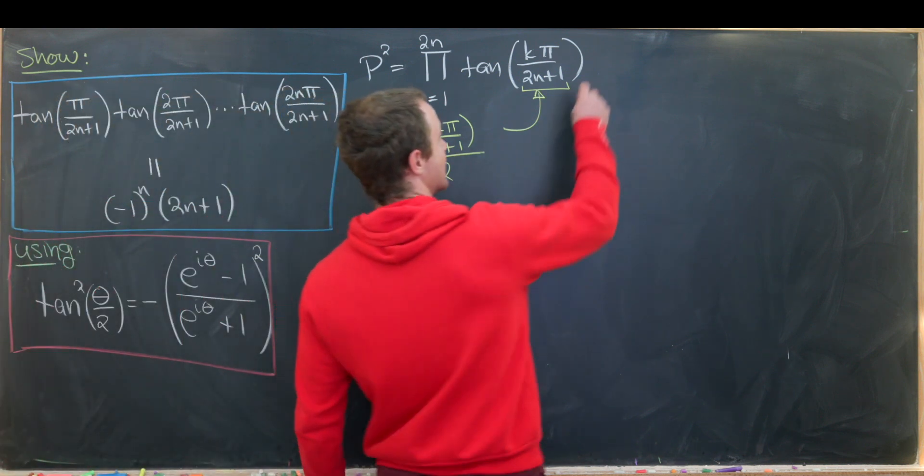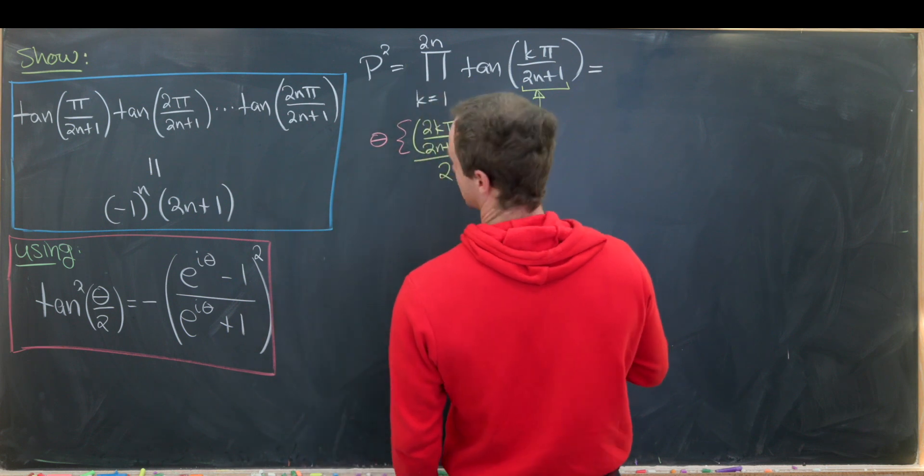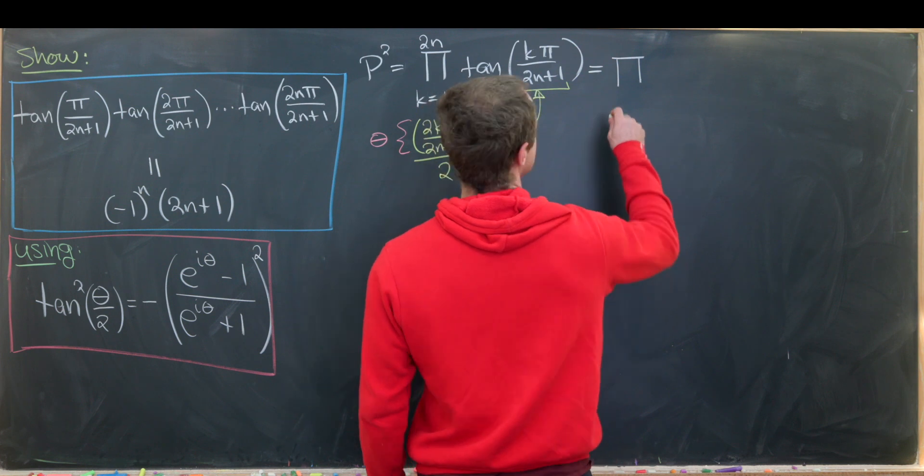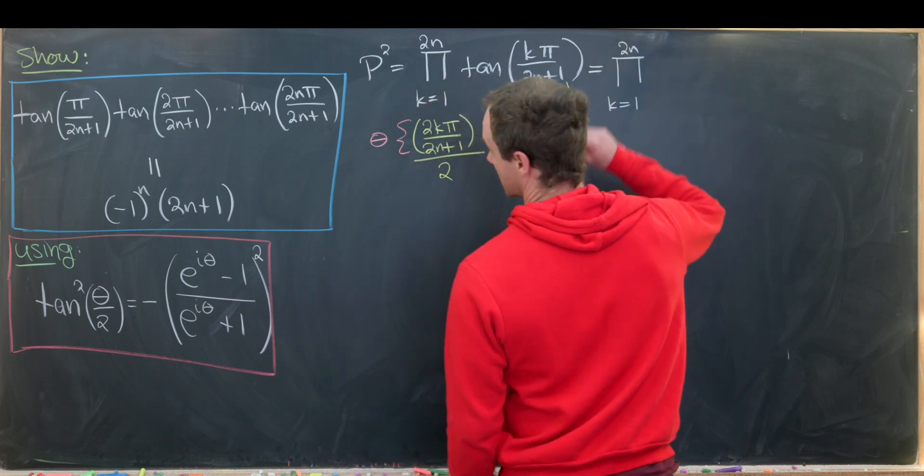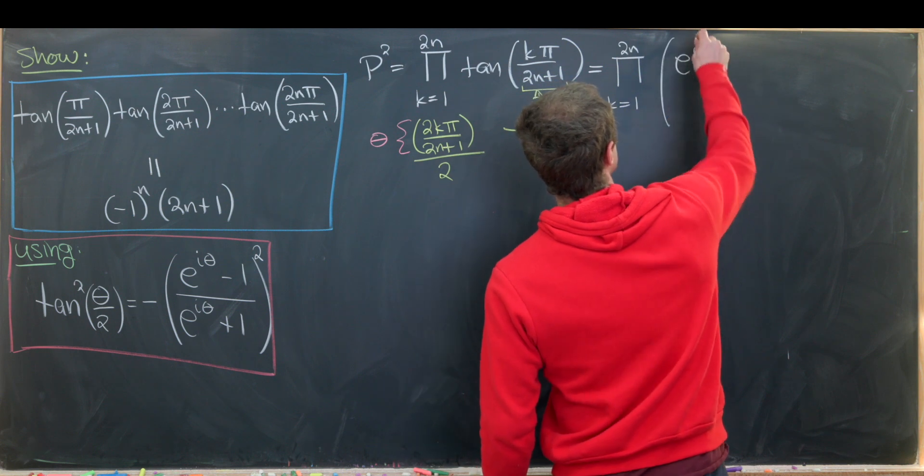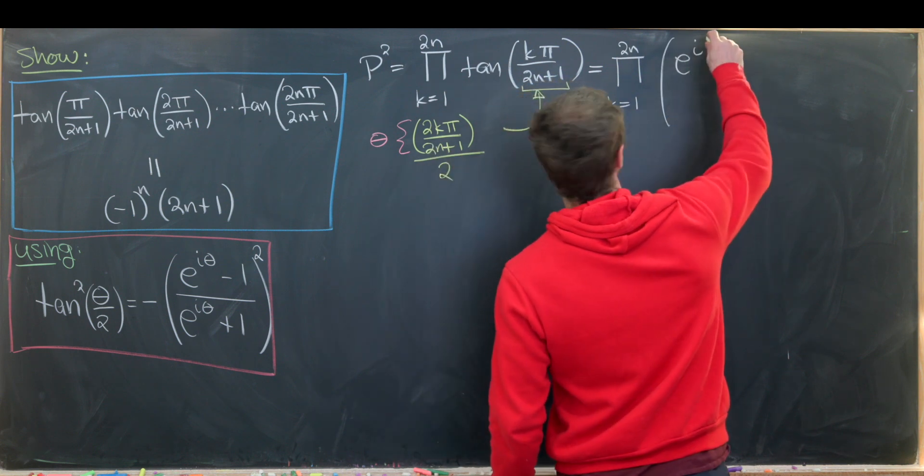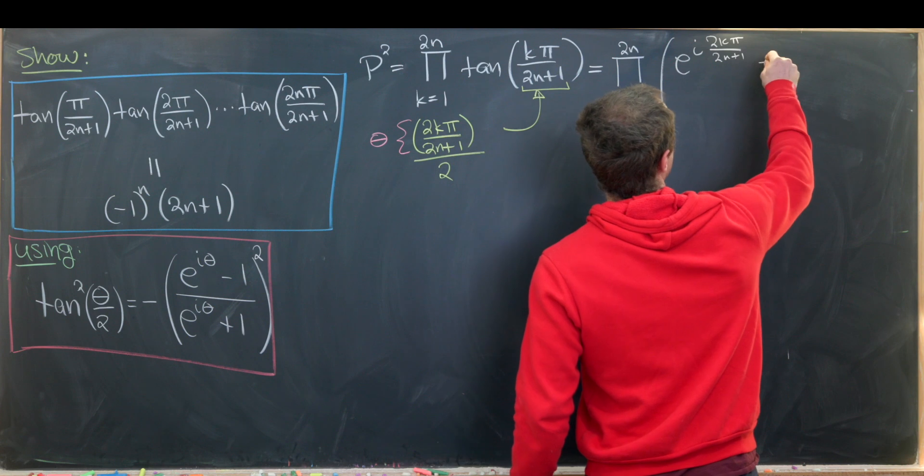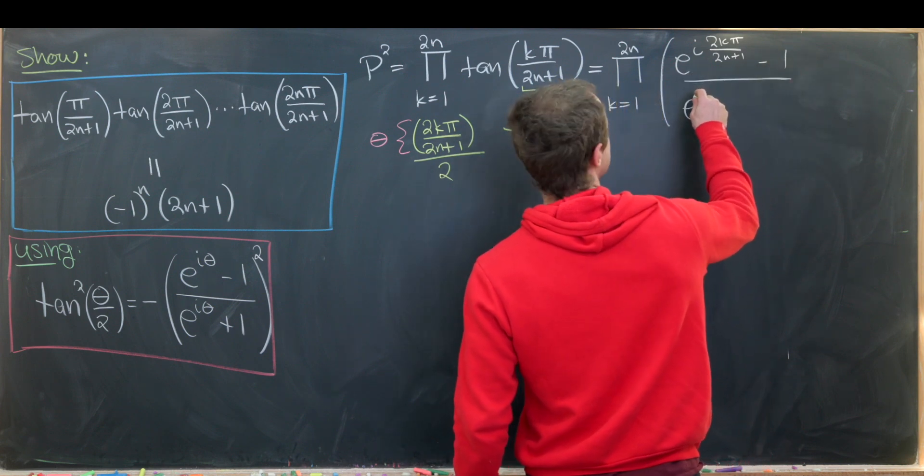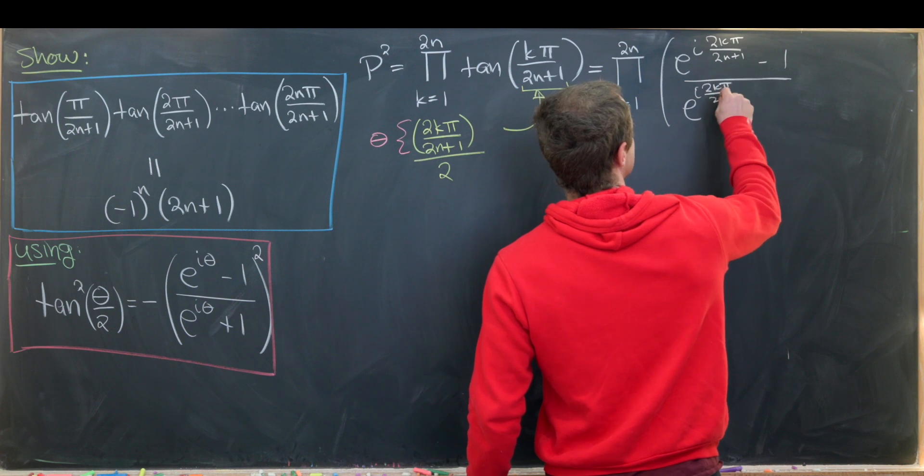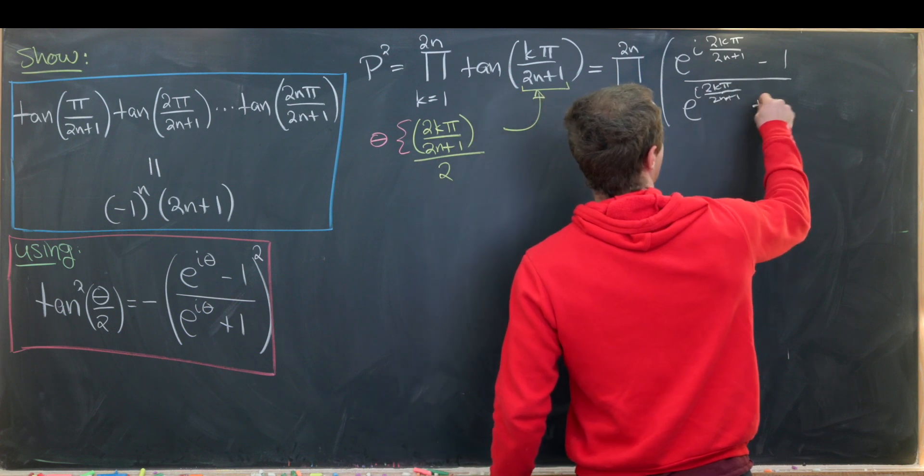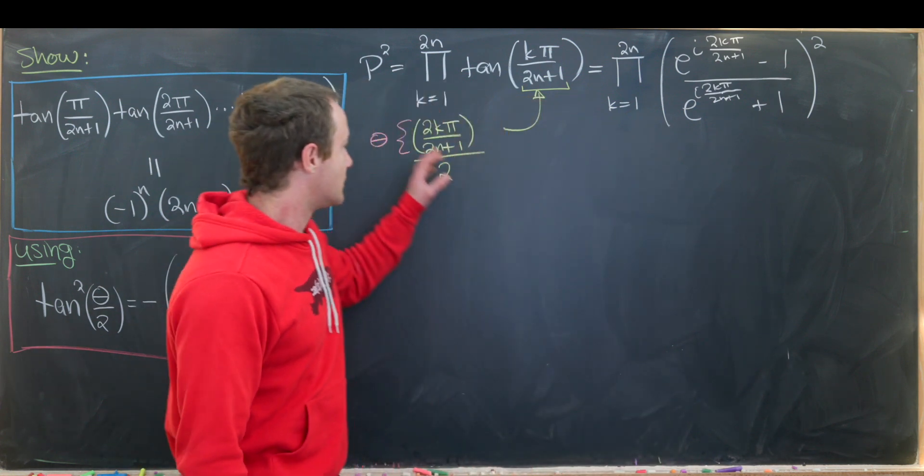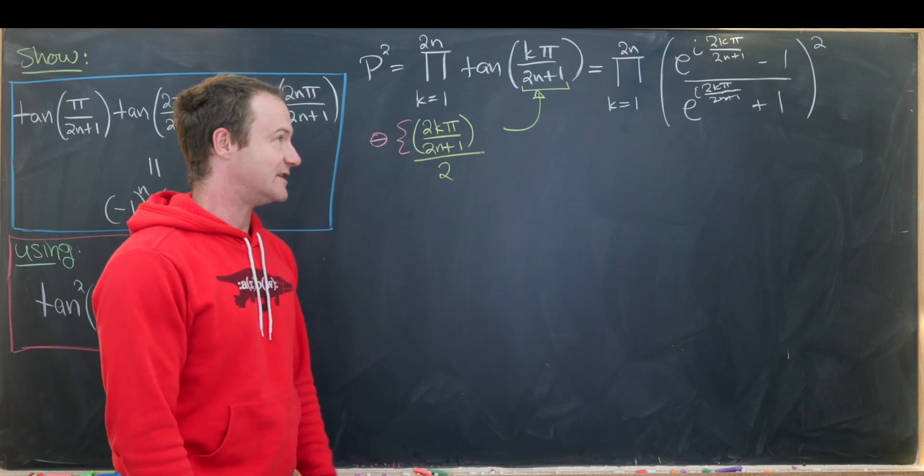Okay so now let's apply this complex exponential formula to give us the following object. This will be the product as k goes from 1 to 2n of e to the i θ. But like I said θ is this. This is 2kπ over 2n plus 1 plus 1 minus 1 over e to the i 2kπ over 2n plus 1 plus 1 and then quantity squared. Notice I no longer have this minus sign here because I'm multiplying together 2n terms. That's an even number of terms.